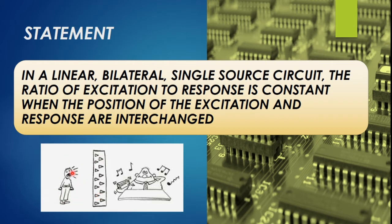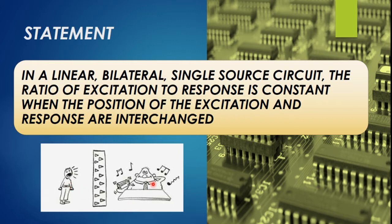We have one source here and one response here. Response means the person at the output who is receiving the output. Even if the source is shouting, the receiver is not able to hear anything because of the wall. Now try interchanging the position — let the person who shouts go to the other side. If he shouts from that side too, the wall is going to stop the voice, so the respondent is not going to hear anything. So wherever the sources and responses are placed, or even if they are interchanged, the output remains constant. That is what we mean by reciprocity theorem.